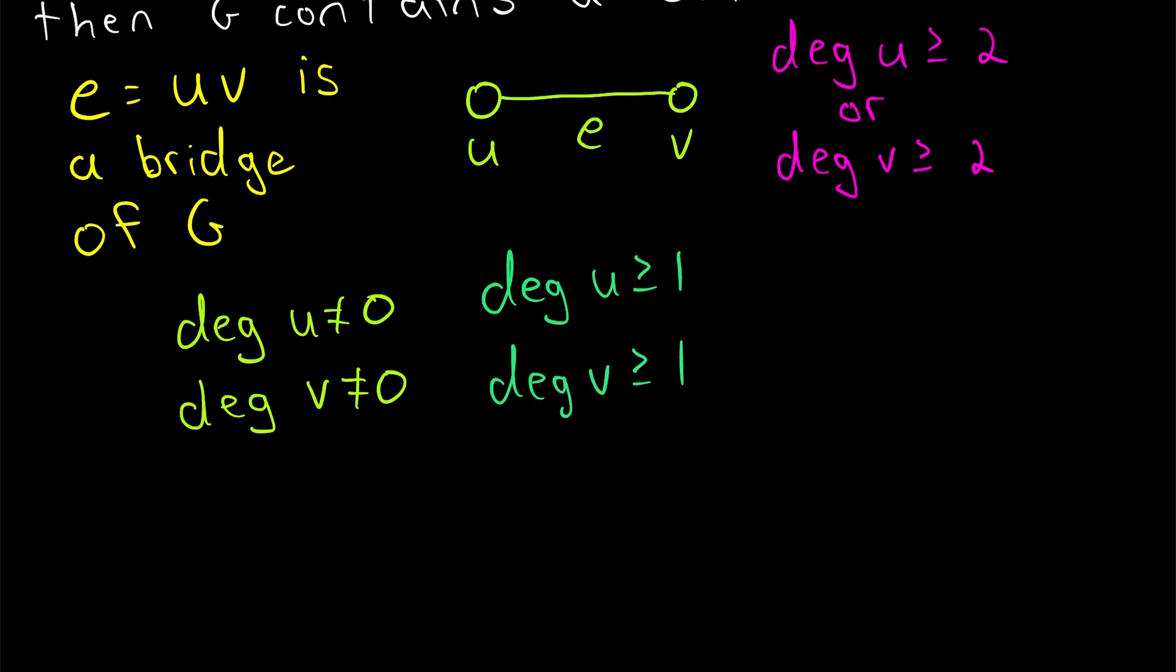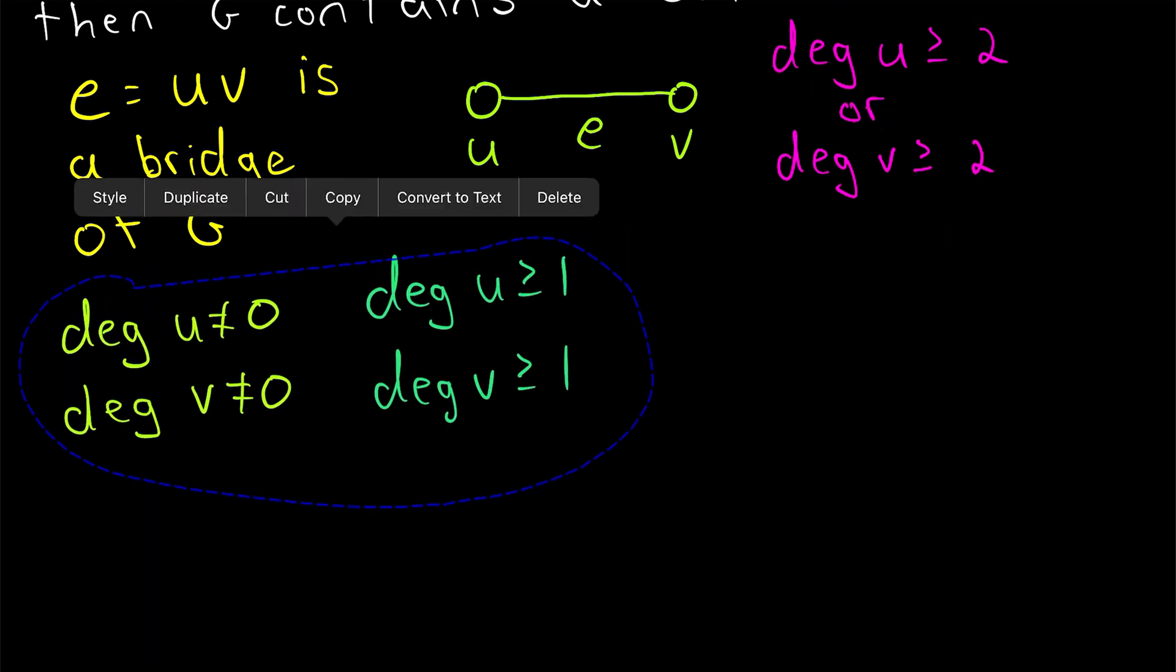So we're almost at our desired result. We just need to show that at least one of these degrees has to be greater than or equal to 2. So is it possible that the degree of U is equal to 1 and the degree of V is equal to 1? Let me change these relations here. Is this situation possible?